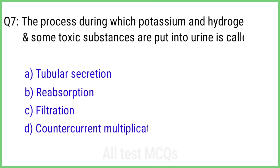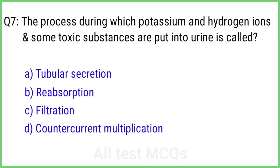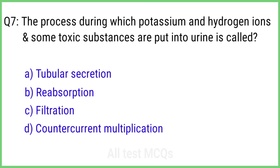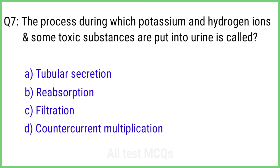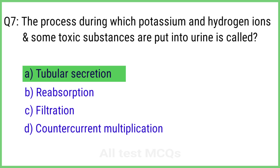Question 7. The process during which potassium and hydrogen ions and some toxic substances are put into urine is called? The right answer is option A: Tubular secretion.